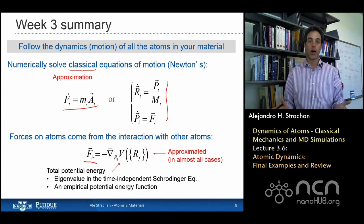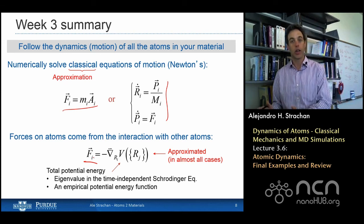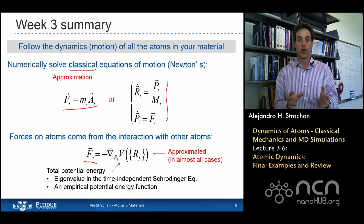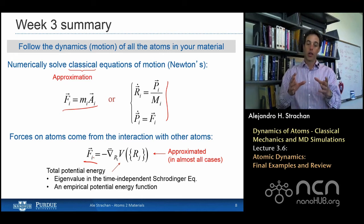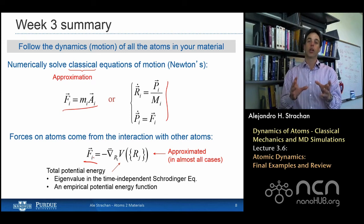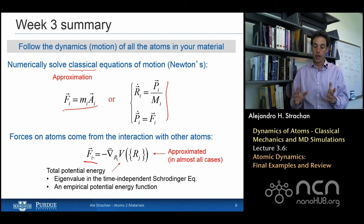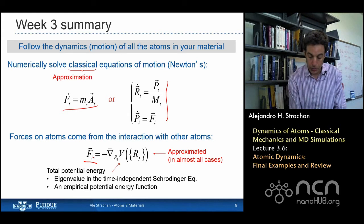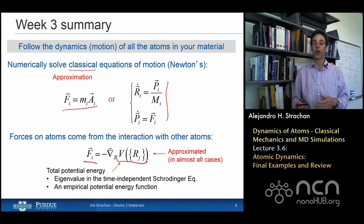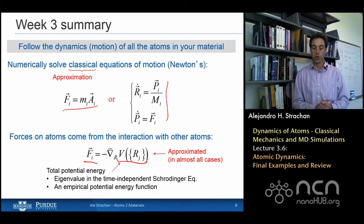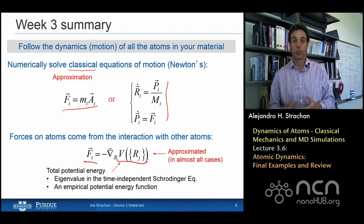We either solve it in a computer or under some special conditions like low temperature, we can actually solve analytically these oscillations because we can make a harmonic approximation. At the heart of this is the calculation of the force that is computed as a negative gradient of a potential energy function. We spent quite a bit of time talking about how one can describe this potential energy function for a variety of different materials using interatomic potentials. Of course, I can do an ab initio calculation to obtain this potential energy function. However, those are more expensive computationally. But this function V would be the eigenvalue of the Schrodinger equation within the Born-Oppenheimer approximation.